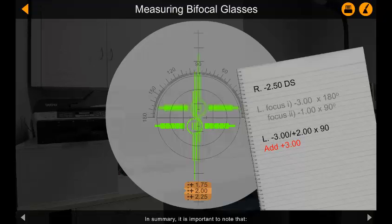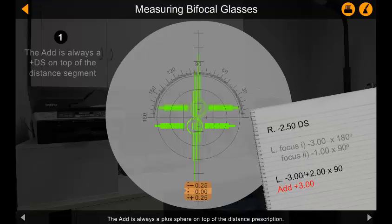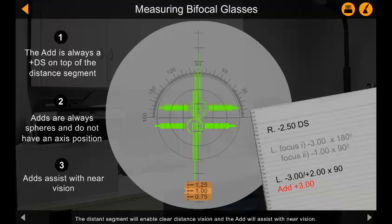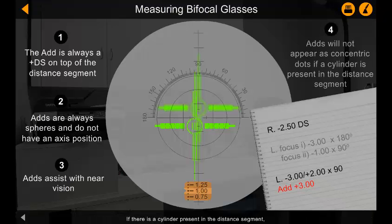In summary, it is important to note that the add is always a plus sphere on top of the distance prescription. The add is never recorded with an axis position, as spheres do not have an axis. The distance segment will enable clear distance vision, and the add will assist with near vision. If there is a cylinder present in the distance segment, the add will not appear as a ring of concentric dots on the reticule.